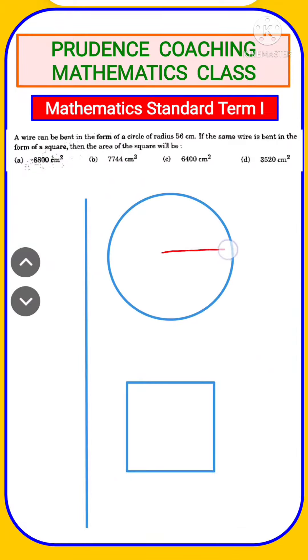The radius is given to be 56 cm. Let us find the circumference of this circle with the formula 2πr and equate it with the perimeter of the square, which is 4a, where a is the side.